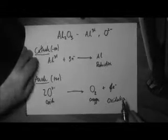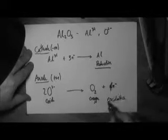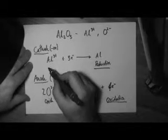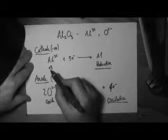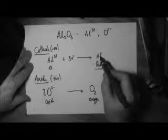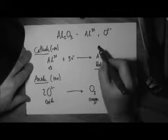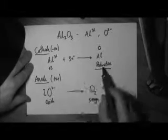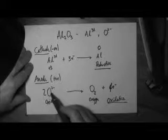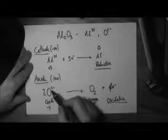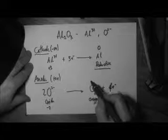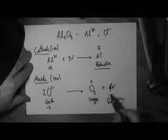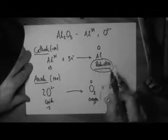We could also use oxidation numbers for those of you that know what they are. The oxidation number of this is three because it's the same as the charge on the ion, so this has an oxidation number of three plus. Pure elements have oxidation numbers of zero so it's gone from three plus to zero, that's a reduction in oxidation number. Oxide has an oxidation number of minus two, it's the same as the charge on the ion. This goes to zero so minus two to zero is an increase in oxidation number, therefore an oxidation.